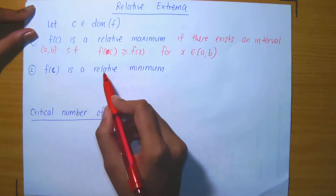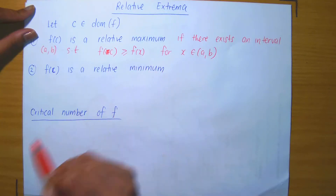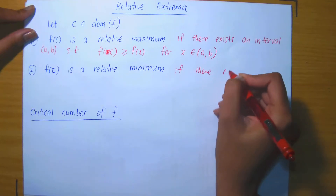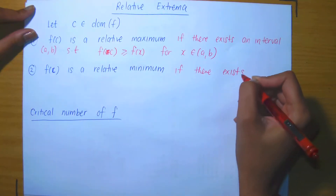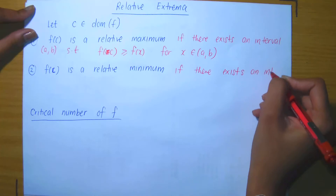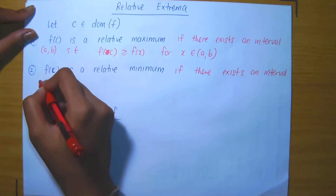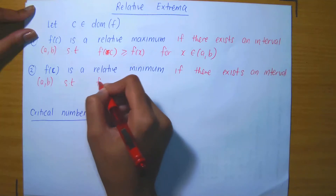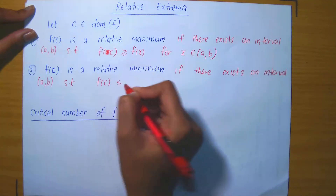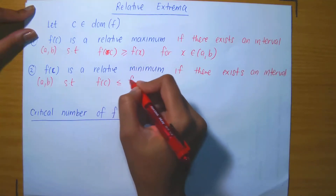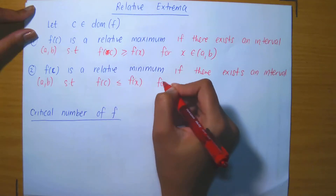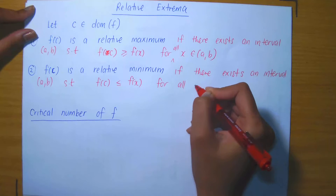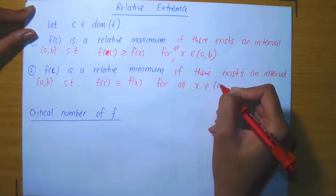We say that f of c is a relative minimum, or a local minimum, if there exists an open interval (a, b) such that f of c is less than or equal to f of x for all x in that open interval.